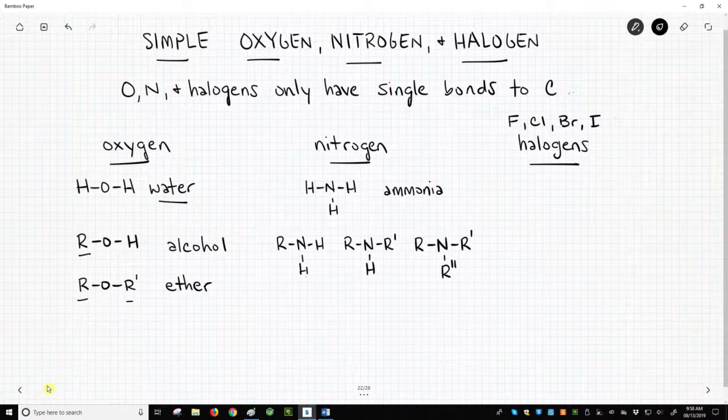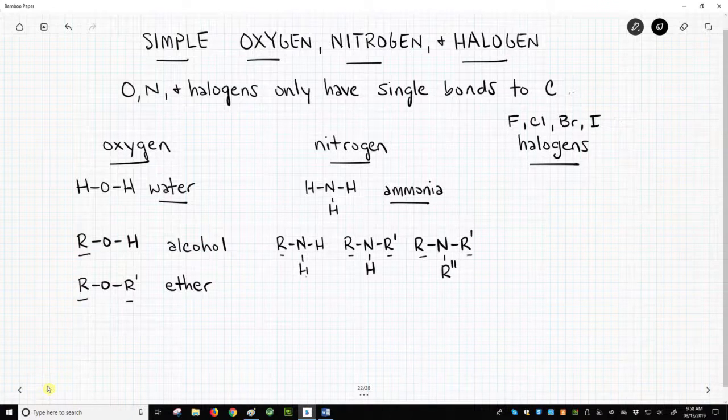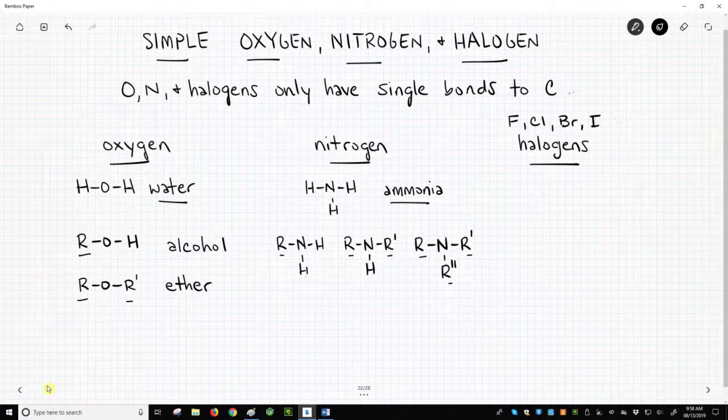Let's move to nitrogen. Nitrogen can have three bonds, and ammonia is an example of a nitrogen-containing molecule. Regardless of whether we replace one, two, or three hydrogens with R groups in ammonia, we always get the same functional group called an amine.